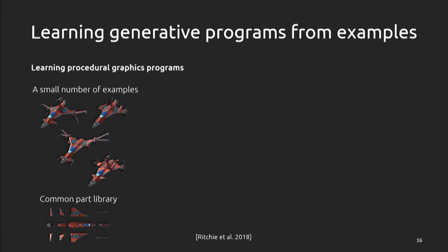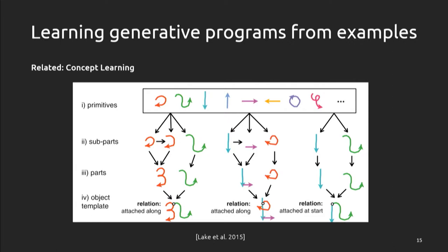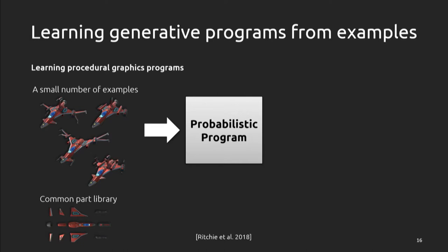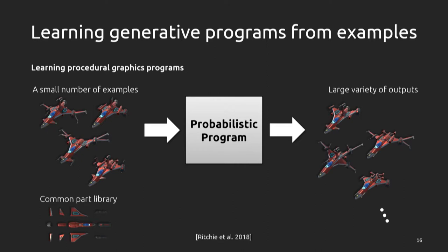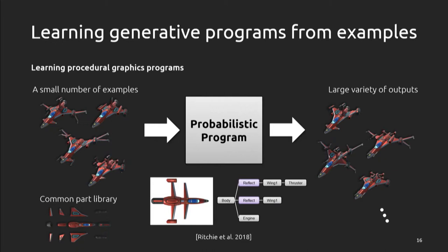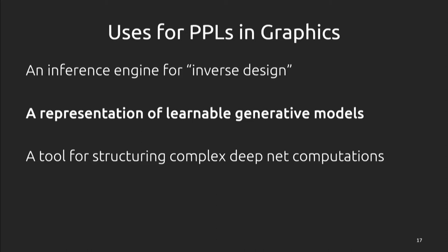We did something similar with 3D graphics. Looking at spaceships, given a small number of examples built from a common part library — similar to motion primitives in concept learning — can we learn a probabilistic program that we can sample from to generate a large variety of outputs resembling the examples, using the same parts and spatial relationships? The data representation involves graph structures and hierarchies showing how parts are connected, encoding useful information like symmetries — such as the reflectional symmetry in wings attached to a spaceship body. Once we have the program, you can run it forward to spit out new results that look like what the user intended.